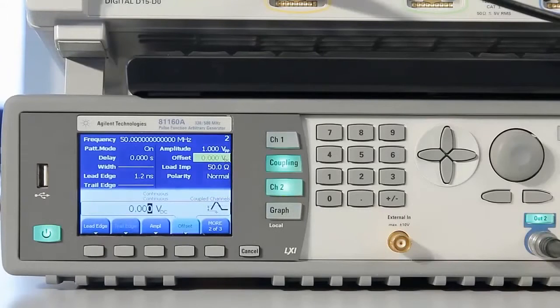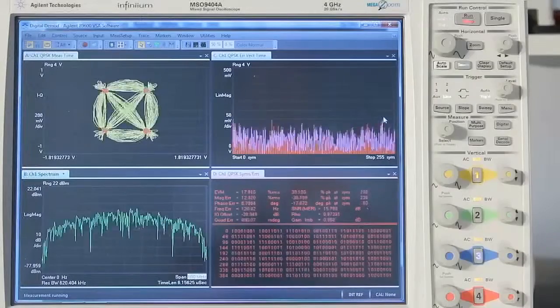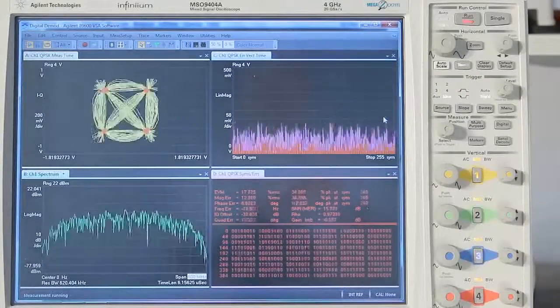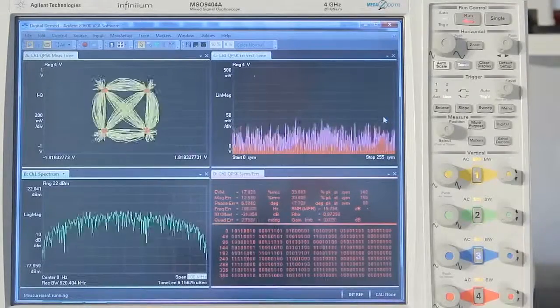As test setup we have the 81160A pulse function ARB generator and a 9000 series oscilloscope with the vector signal analysis software running on it.